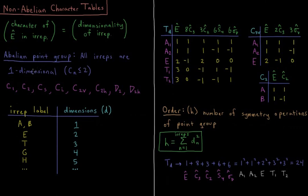So Abelian point groups include C1, C2, Cs, Ci, C2v, C2h, D2, and D2h.